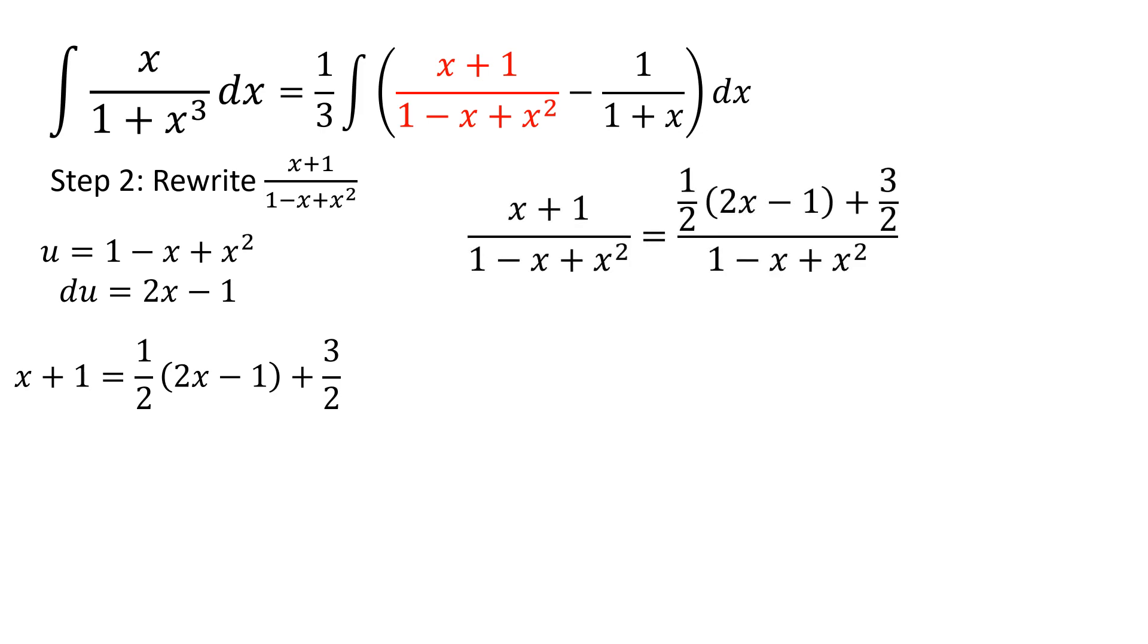If I substitute this into the original fraction, I can then split up the fraction, factor out 1 half times 2x minus 1 over 1 minus x plus x squared plus 3 halves over 1 minus x plus x squared.